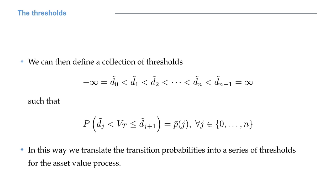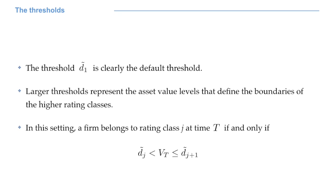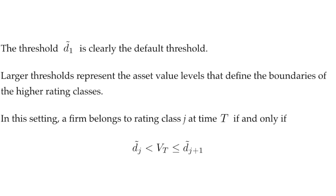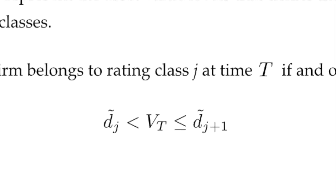For all the other d's, we choose them so that the probability that V capital T is between dj tilde and dj plus 1 tilde is equal to p bar j. In this way, we translate the transition probabilities into a series of thresholds for the asset value of the company. By construction, d1 tilde is the default threshold. If V capital T is smaller than d1 tilde, our company defaults. All the other thresholds simply define the other rating classes, so that our company belongs to class j if V capital T is between dj tilde and dj plus 1 tilde.